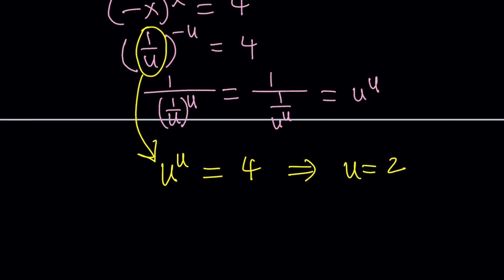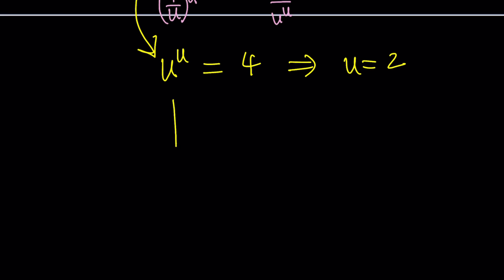But is there only one solution? And the answer is yes. If you consider the graph of y equals x to the power x, and yes, 0, 1 is a point on the graph, you'll realize that this function is increasing on this interval. I believe this is 1 over e. So, 1 over e to infinity, this is increasing.